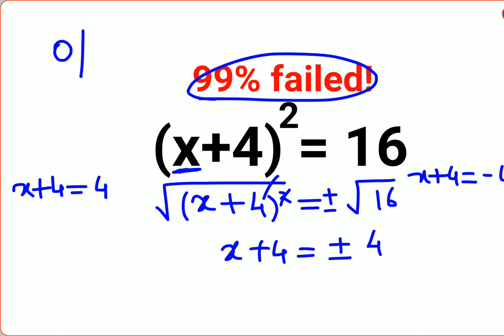So here, subtracting 4 on both sides, I will say x is equals to 0, and x is equals to minus 4 minus 4, so the answer for this is supposed to be minus 8. So here we can say the value for this question is supposed to be 0 or minus 8.